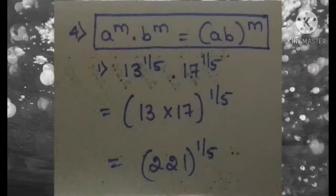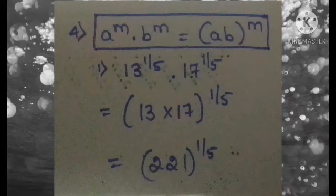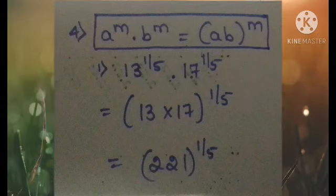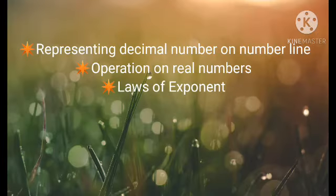Next, an example for the fourth law: a raised to m into b raised to m equals (ab) raised to m. The question is 13 raised to 1/5 into 17 raised to 1/5, which equals (13 into 17) whole raised to 1/5, which equals 221 raised to 1/5. In this video we have learnt representing the decimal number on a number line, operations on real numbers, and laws of exponents.